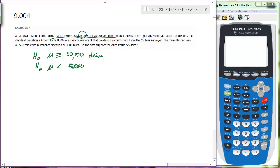From the past studies, the standard deviation is known to be 8,000. So we should assume that we have a known standard deviation σ = 8,000 miles. And then we have a survey of 28 tires, n = 28. And the lifespan was... The mean average for the sample was x̄ = 46,500 with a standard deviation of 9,800. This is our setup.